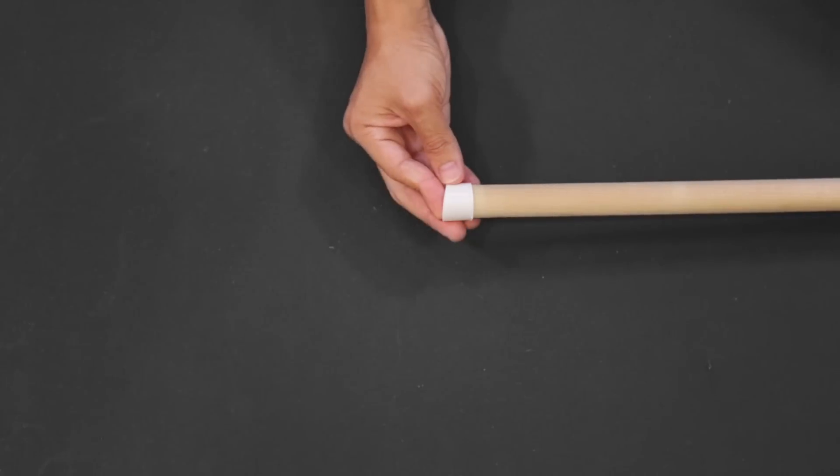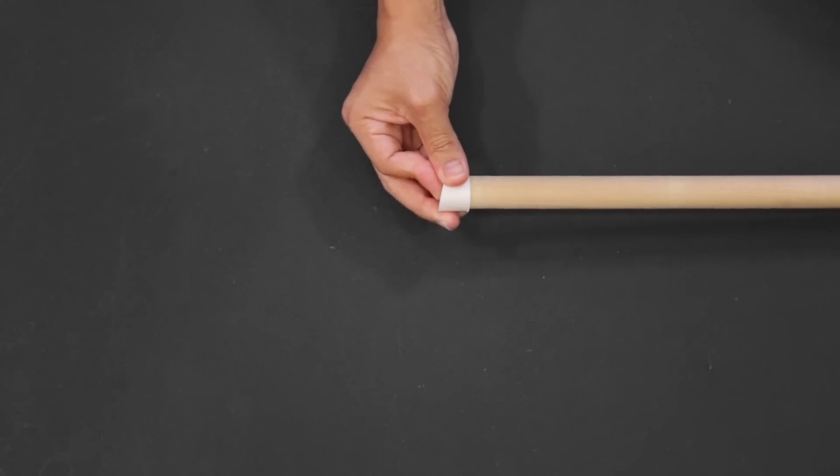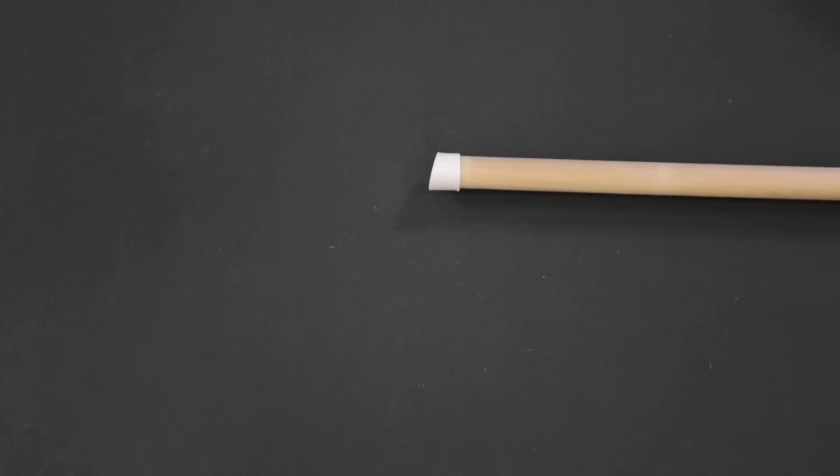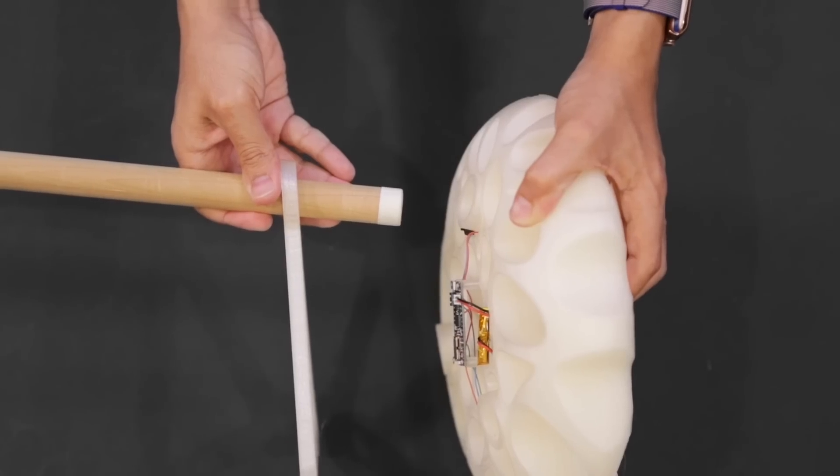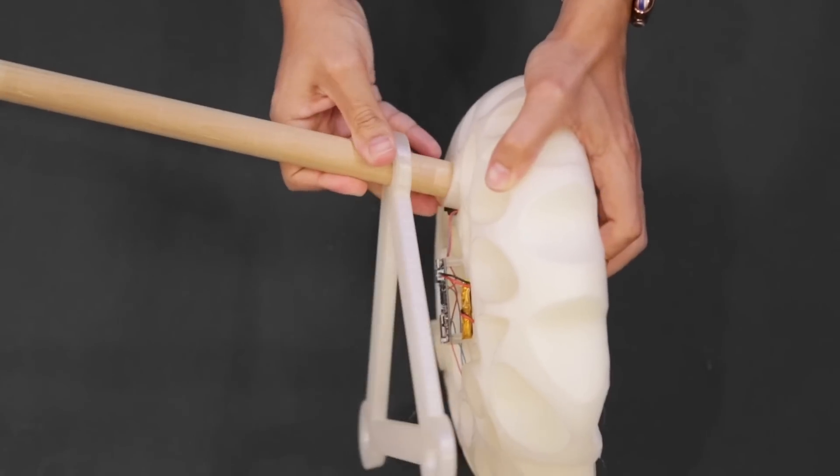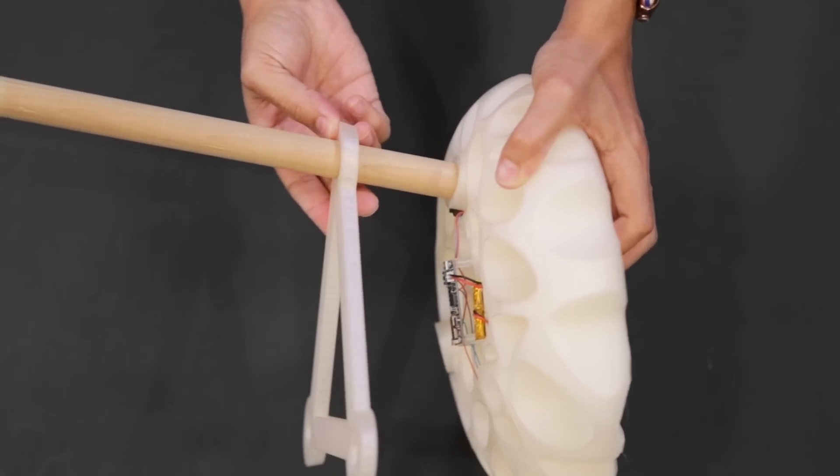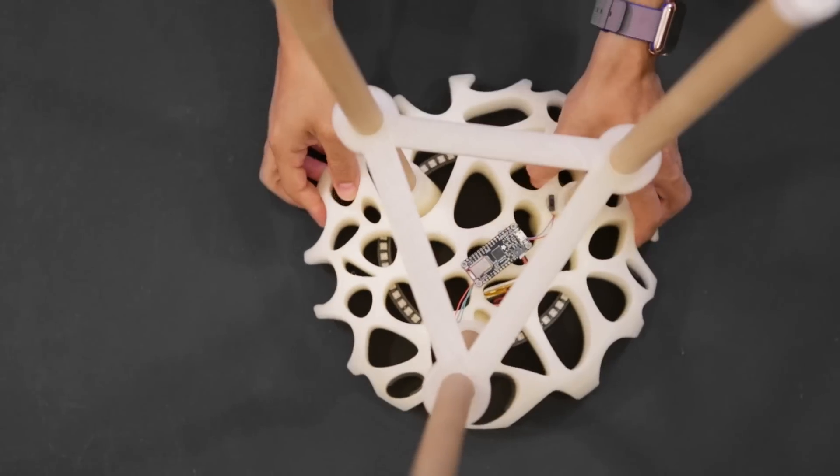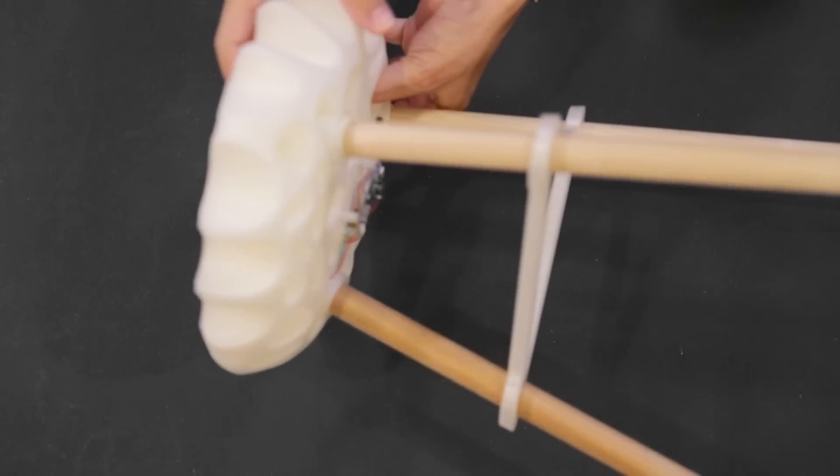For the wooden dowels we 3D printed these rubber feet in NinjaFlex. The bottom of the seat features these couplers for the dowels to be inserted into. A triangular frame adds stability to the legs and it will keep them in place.